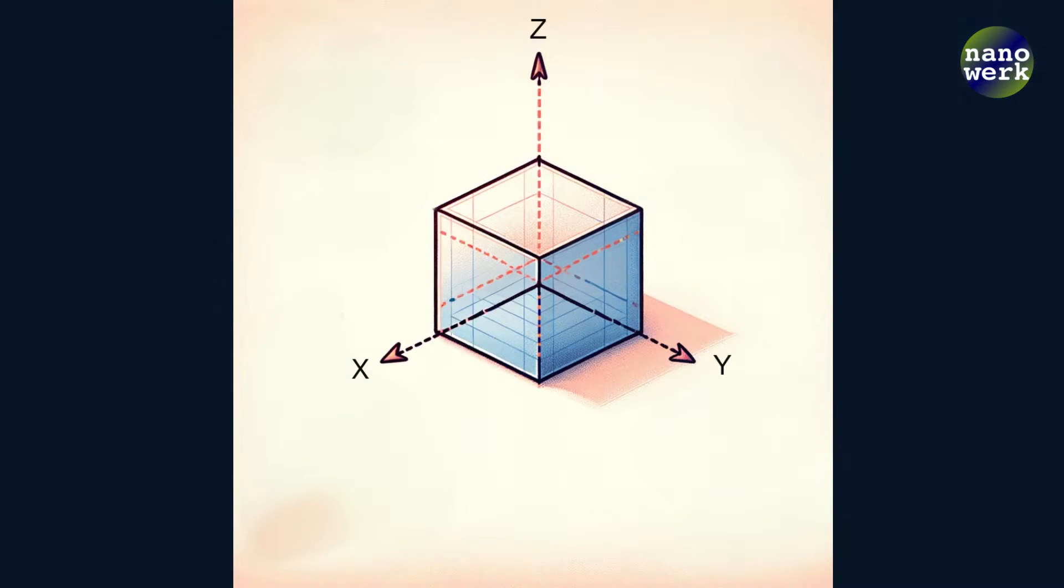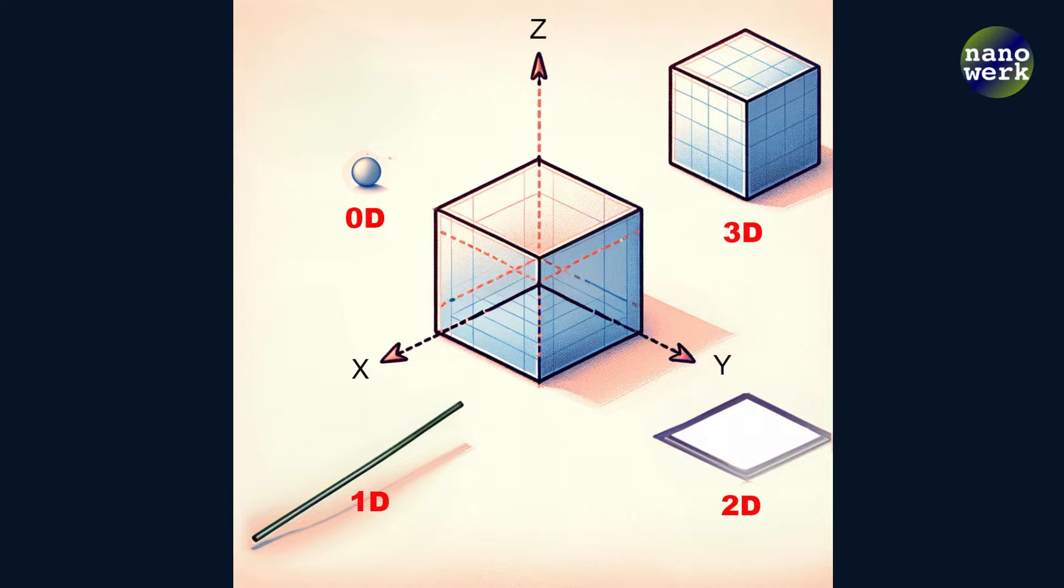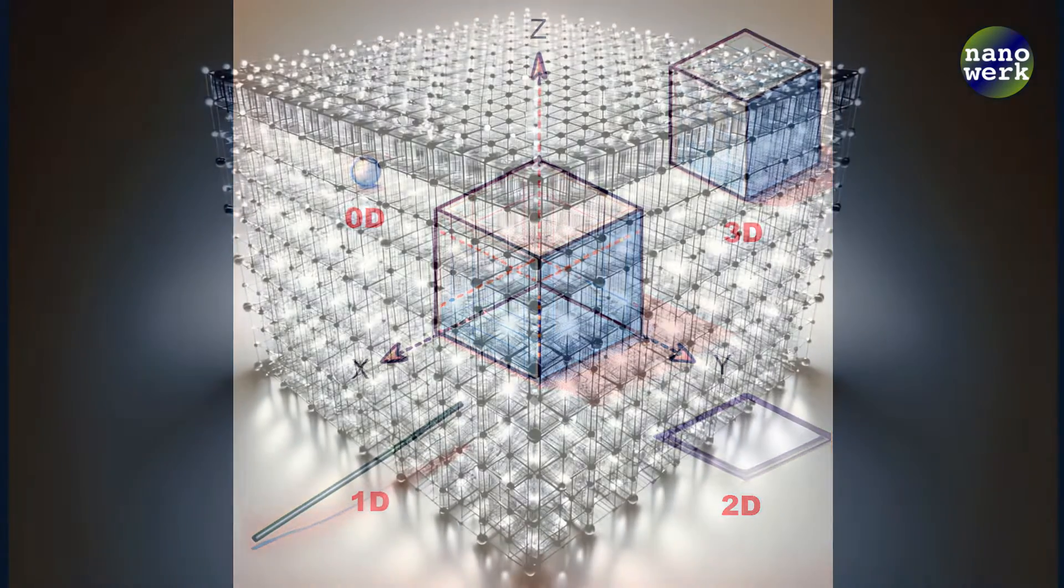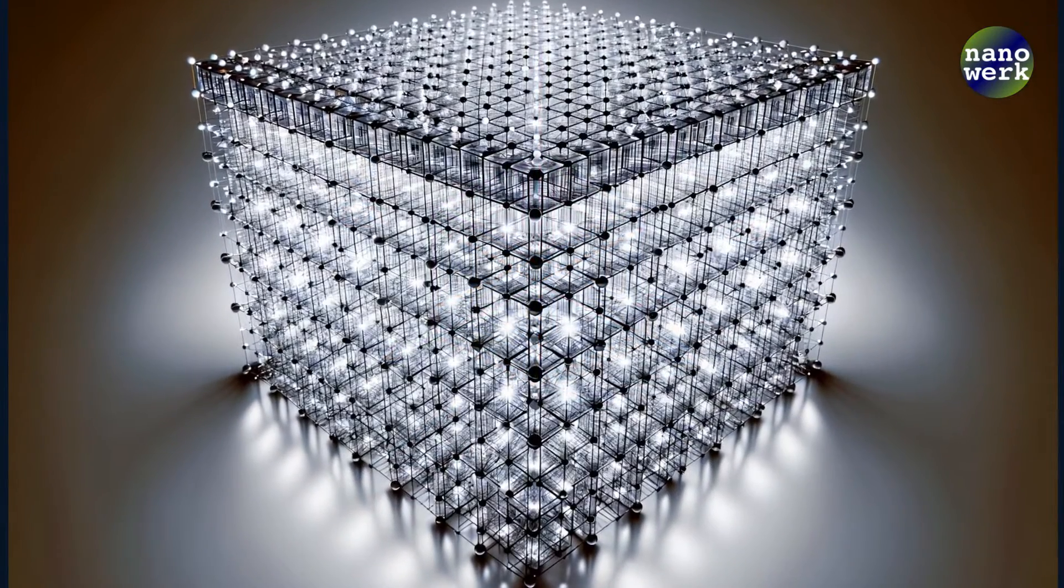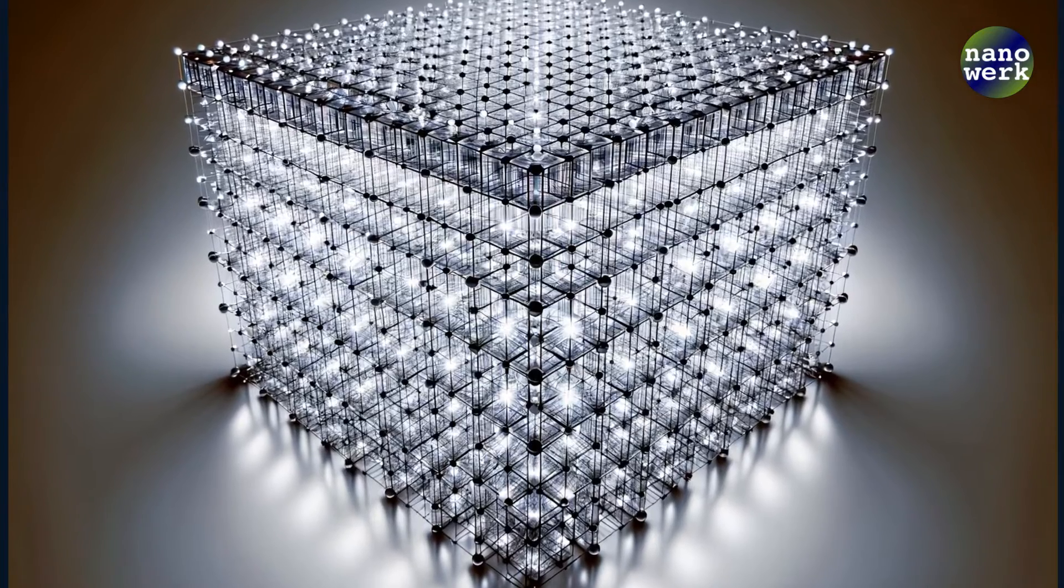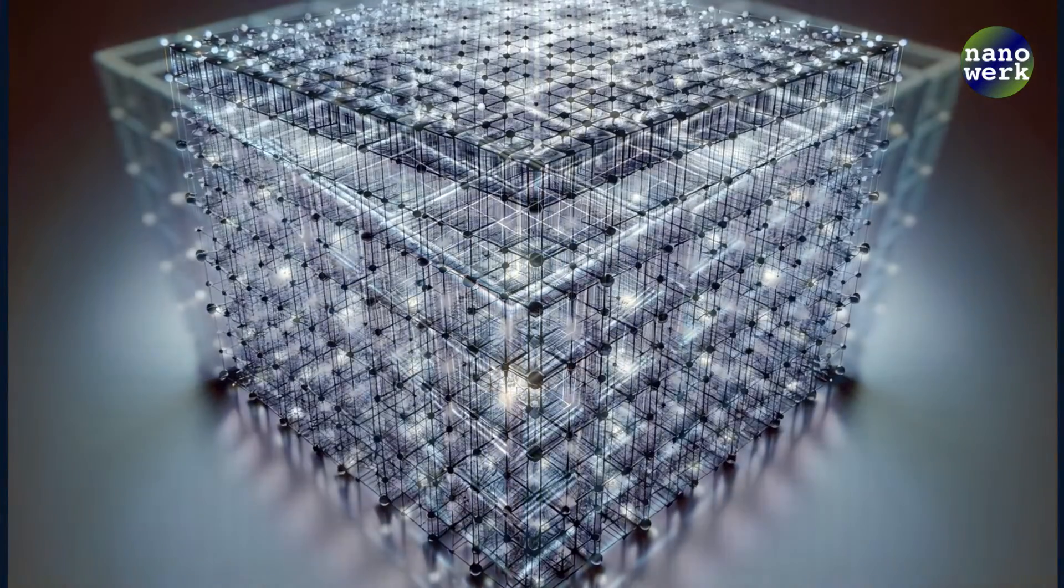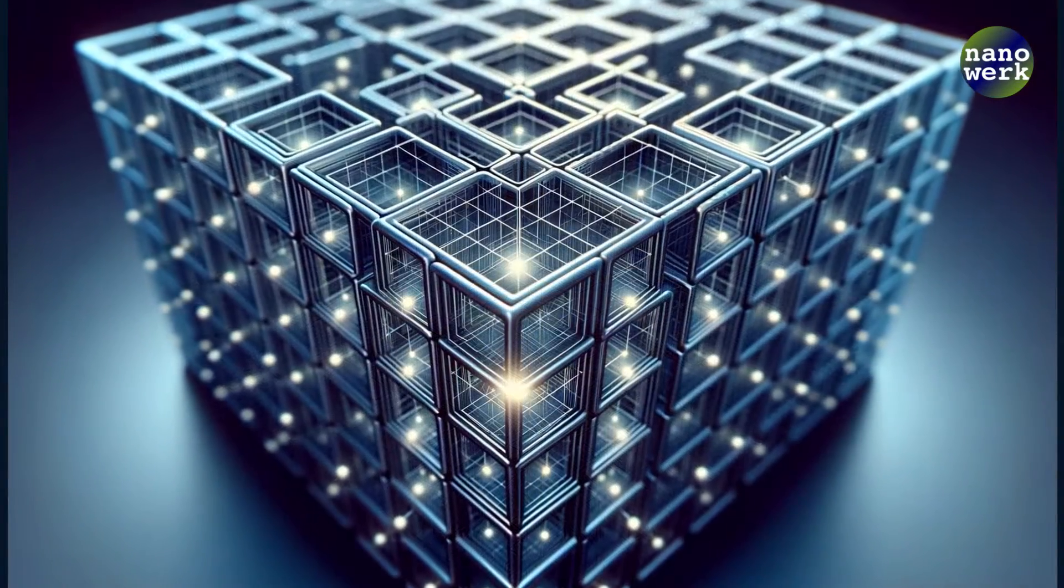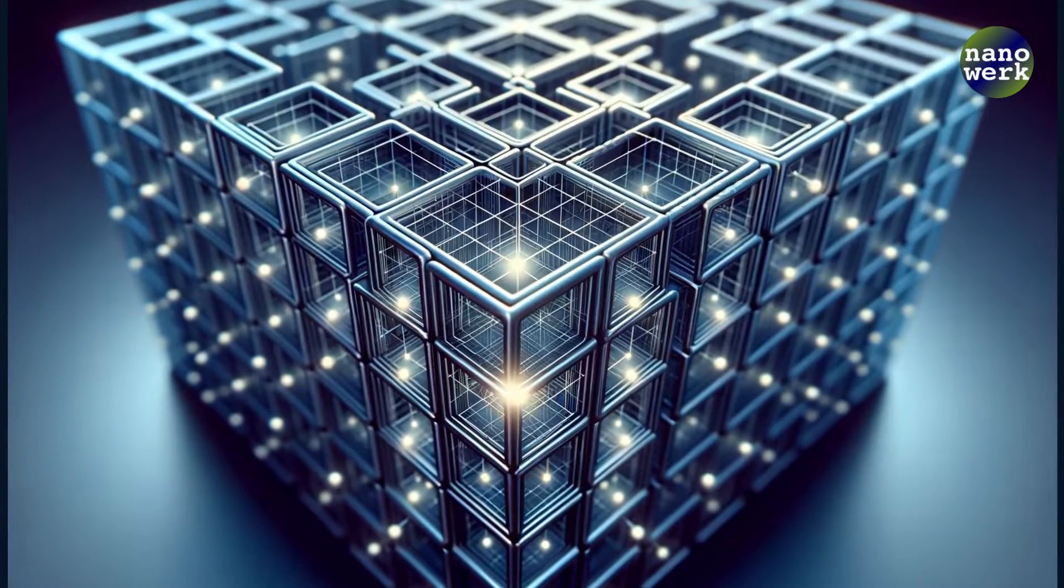Zero-dimensional you ask? This concept is initially challenging to grasp. Imagine confining electrons within an incredibly tiny box, just about the size of a few atoms. In this extremely small quantum scale, electrons start behaving in ways that defy our usual understanding.